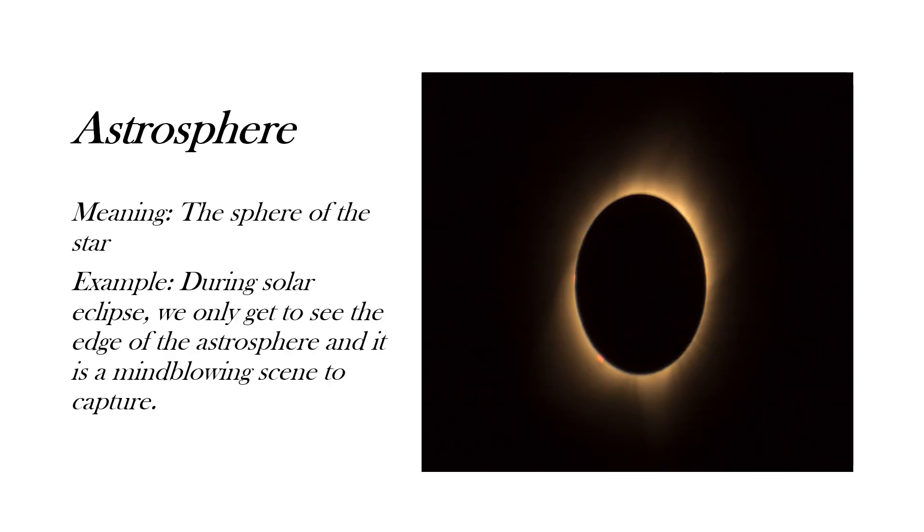Next is astrosphere. It means the sphere of the star. Here, our example is, during solar eclipse, we only get to see the edge of the astrosphere and it is a mind-blowing thing to capture. Here you can see, I have taken a picture where you can clearly see the glimpse of astrosphere during the solar eclipse.